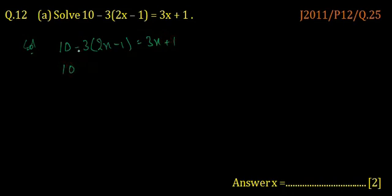First we open the bracket by multiplying minus 3. Minus 3 multiplied by 2x is minus 6x, and minus 3 times minus 1 is plus 3, which is equal to 3x plus 1.